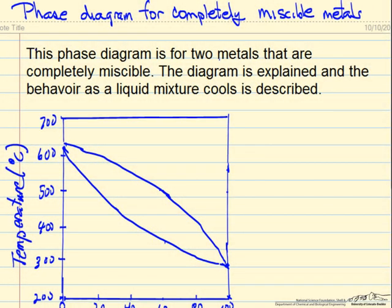In this video we will look at a phase diagram for completely miscible metals. It is a relatively simple phase diagram compared to the one we can have when we have partial miscibility, but it will help to describe the behavior and the properties of the system.